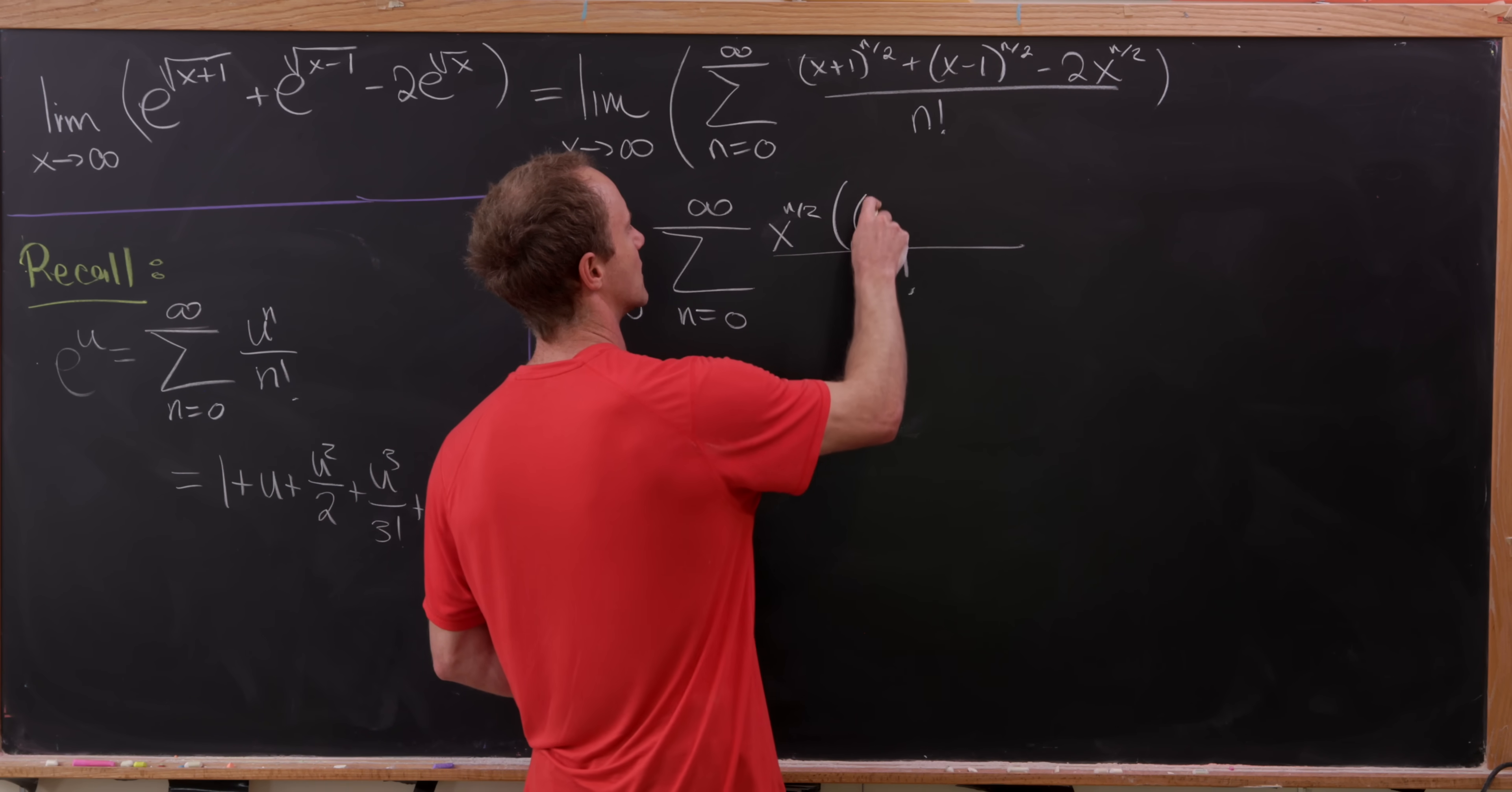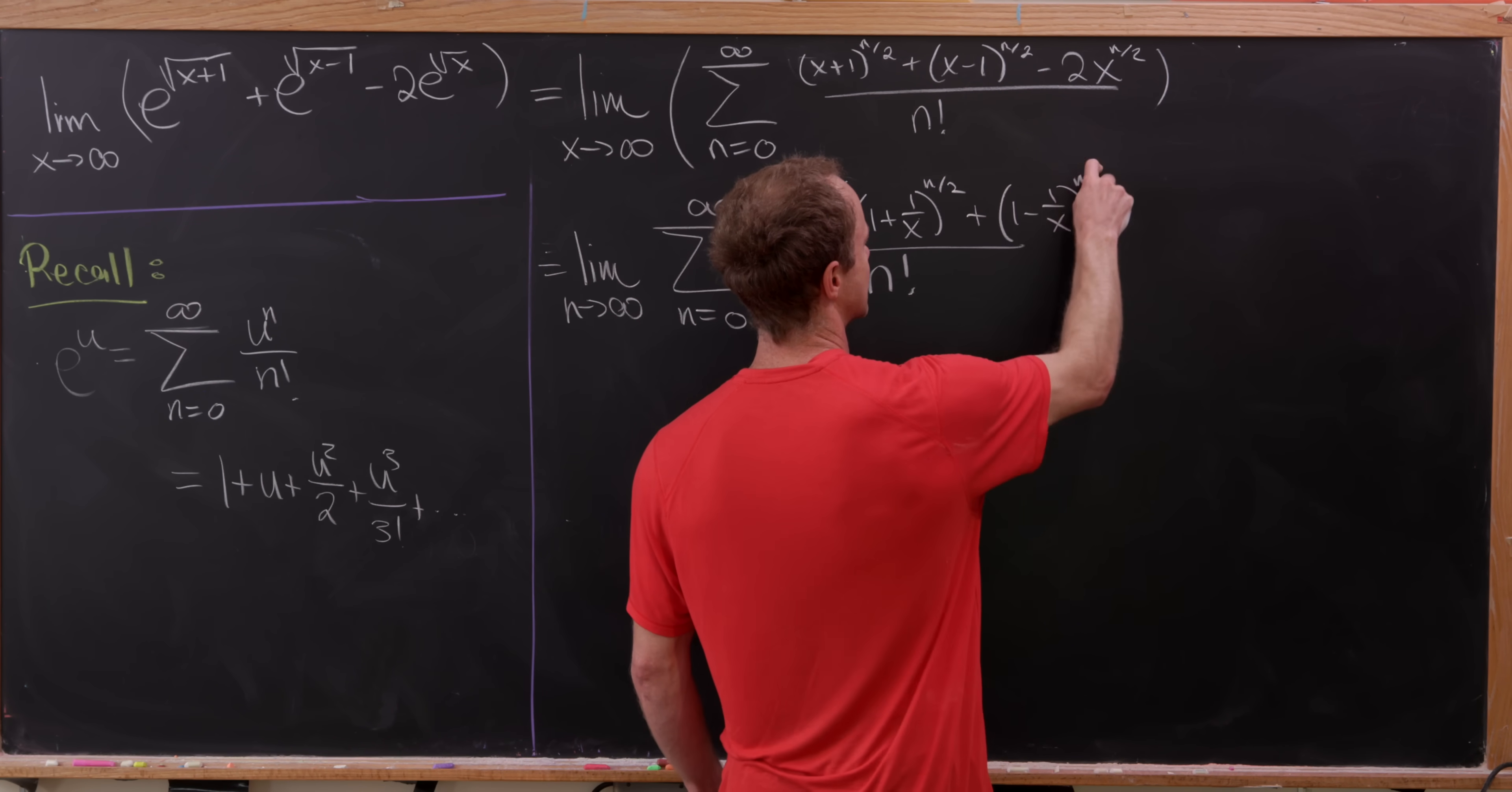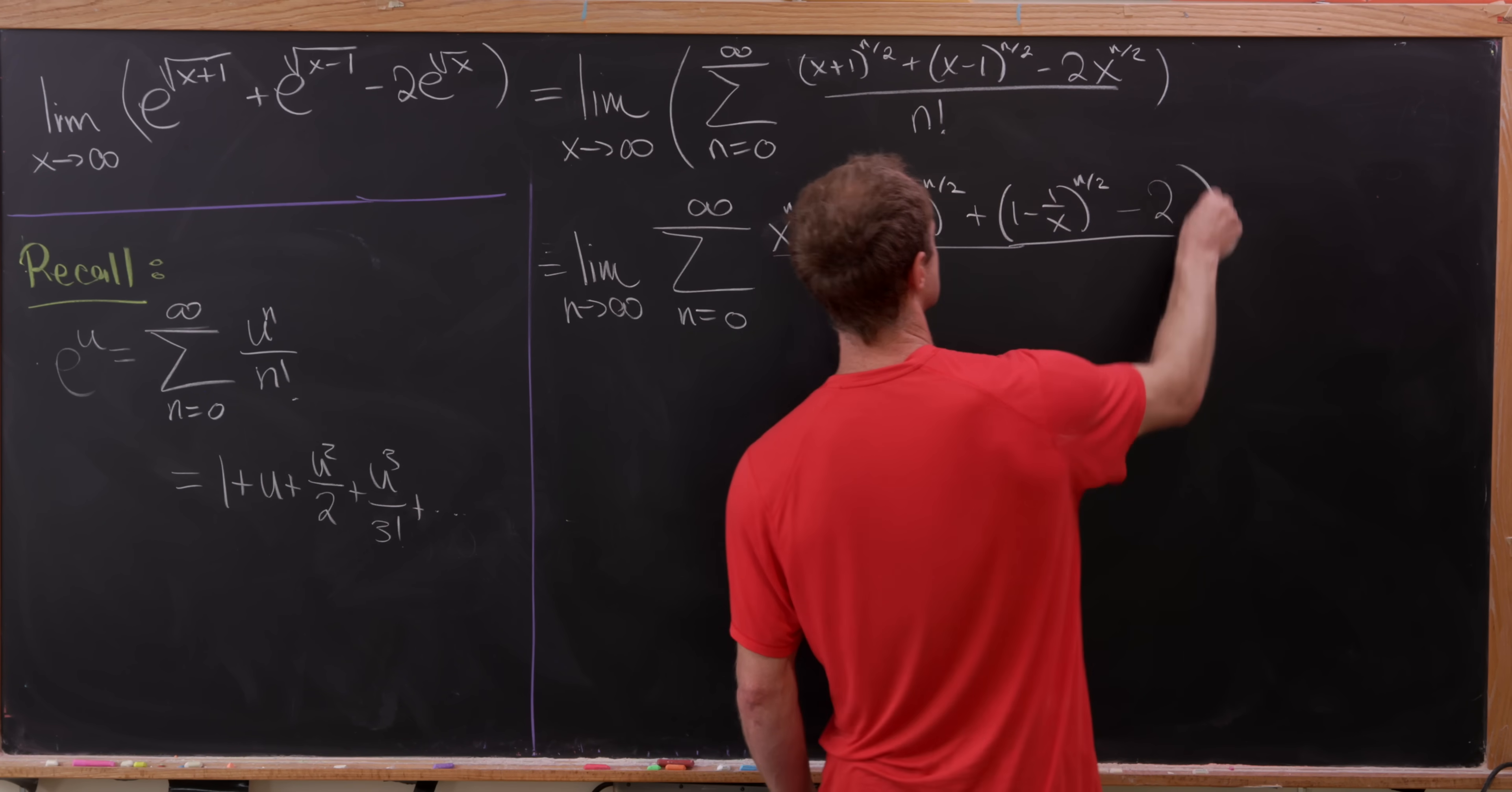And then left over, we'll have a 1 plus 1 over x to the n over 2 for this first term. And then we'll have a 1 minus 1 over x to the n over 2 for this second term. And then, let's see, we'll have a minus 2 for this last term.